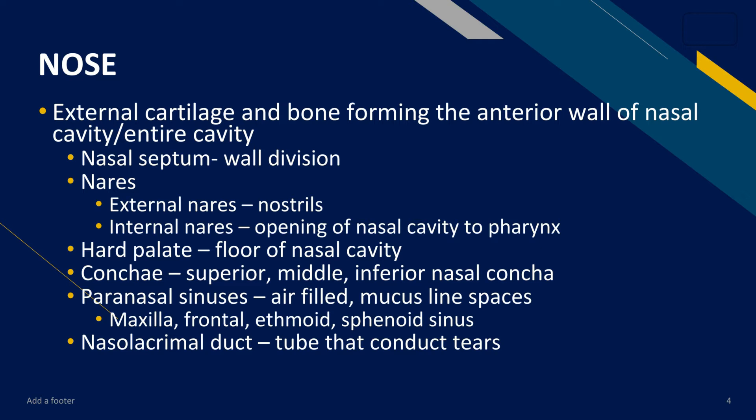The external cartilage and bone form the anterior wall of the nasal cavity. Within your nose, we have different parts: the nasal septum, which is the wall division; the external nares, which are the nostrils; and the internal nares, which are the openings of the nasal cavity to the pharynx. We also have the hard palate, which is the floor of the nasal cavity, and the concha, which is divided into three: the superior, middle, and inferior nasal concha.